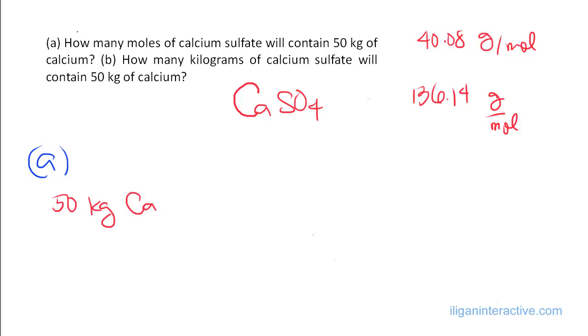Convert that to kilomoles, multiply that by 1 kilomole of Ca is 40.08 kilograms of Ca. And then the kilogram Ca and kilogram Ca cancels out.